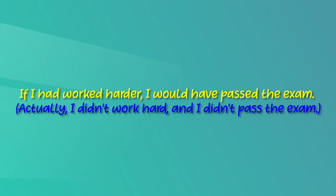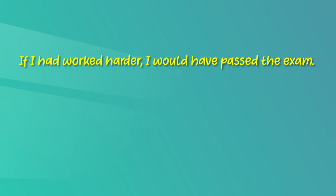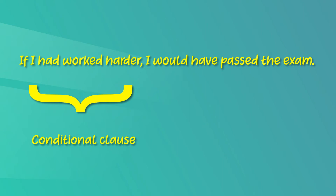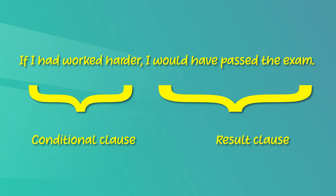However, the speaker expresses what could have happened if he had changed his behaviour. The condition is explained by the clause "If I had worked harder." So if this condition had been fulfilled, the speaker would have passed the exam. "I would have passed the exam" is the result clause — it shows the would-have-been result of fulfilling a condition which never happened.